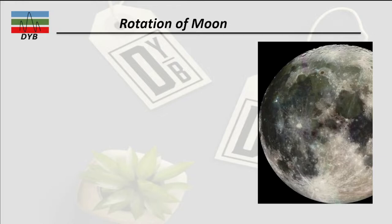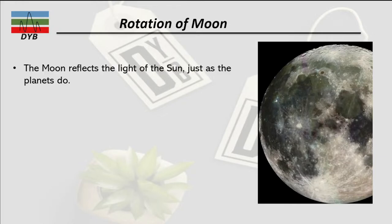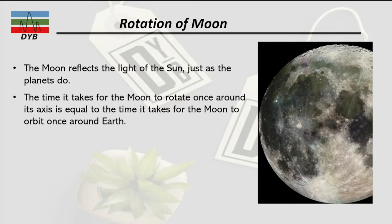Let's look at the rotation of the moon first. The moon reflects light from the sun, just as other planets do — it does not have its own source of energy, as discussed in the previous lecture. The time it takes for the moon to rotate once around its axis is equal to the time it takes for the moon to orbit around the earth. This means we always look at one side of the moon, which is called the near side of the moon.